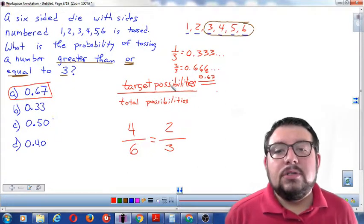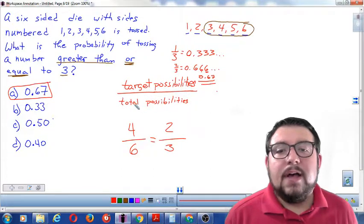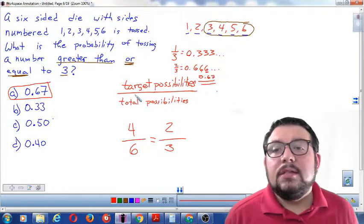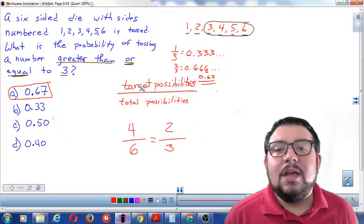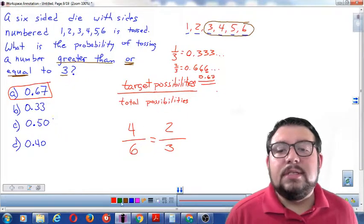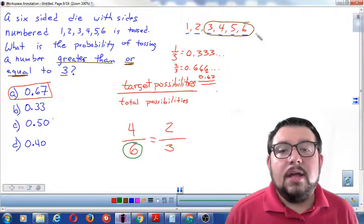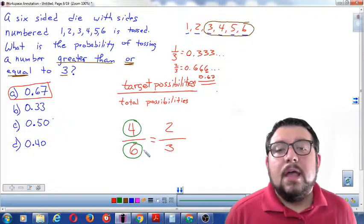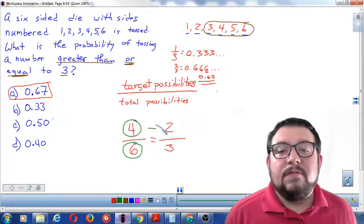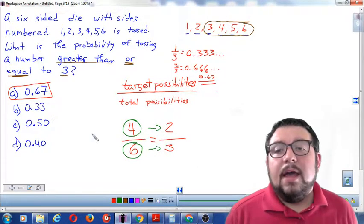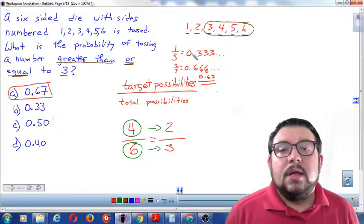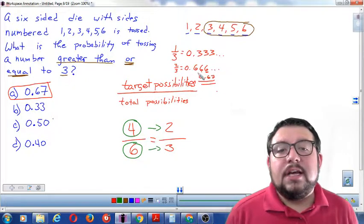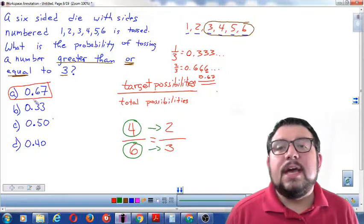Alright, so there you go. To solve a probability problem, you get your total number of possibilities and you put it in the denominator. Then you get your target number of possibilities and you put it in your numerator. If possible, simplify your fraction. And if you need a decimal answer, convert the fraction to a decimal, and don't be afraid to round if you don't see the exact match.